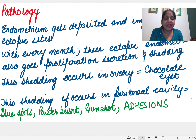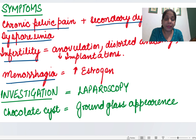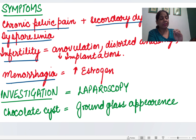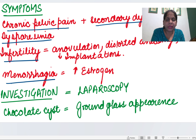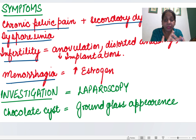What are the symptoms of endometriosis? In the patient of endometriosis there are a lot of adhesions and many ectopic sites of endometrium. These ectopic sites and adhesions give rise to chronic pelvic pain, secondary dysmenorrhea, dyspareunia, infertility, and menorrhagia.